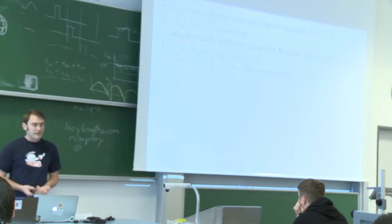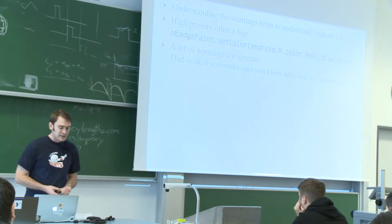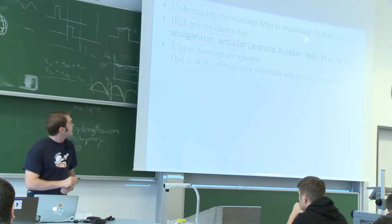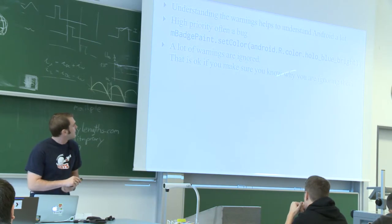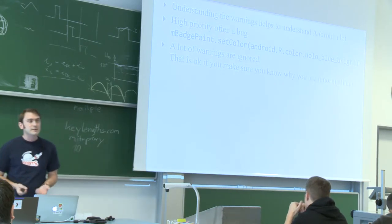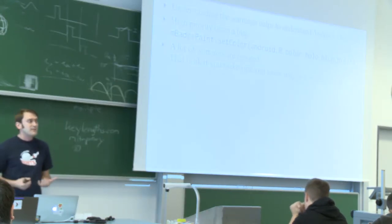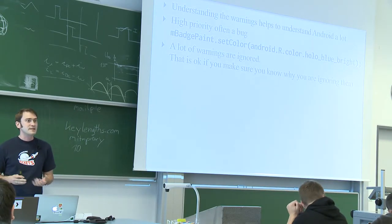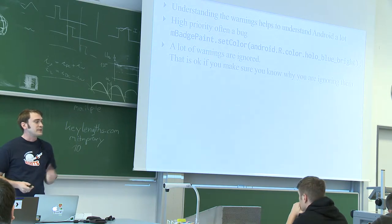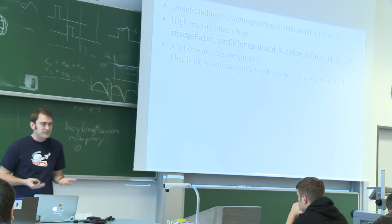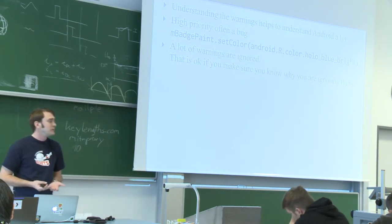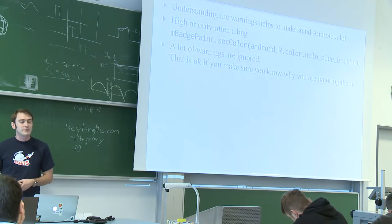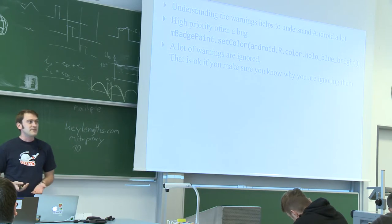If you have high priority lint warnings, they're mostly bugs. Like this example where you put an ID into the setColor method, and the color method expects a color value, not just an integer. So the color would be completely wrong. If you have high priority lint warnings, fix them as fast as possible.